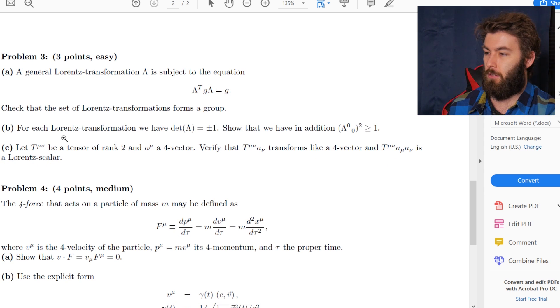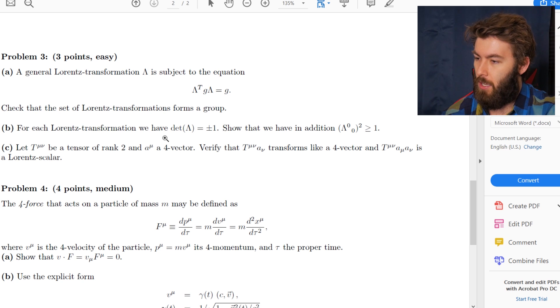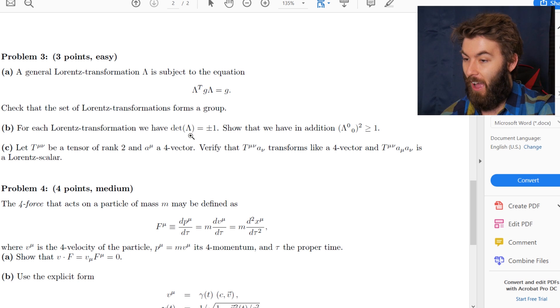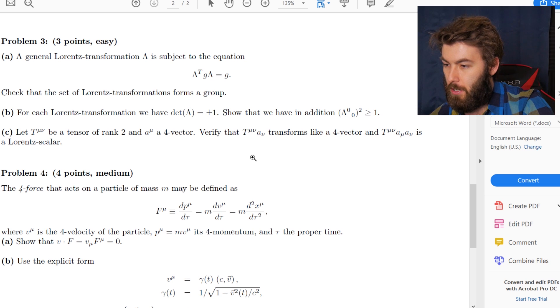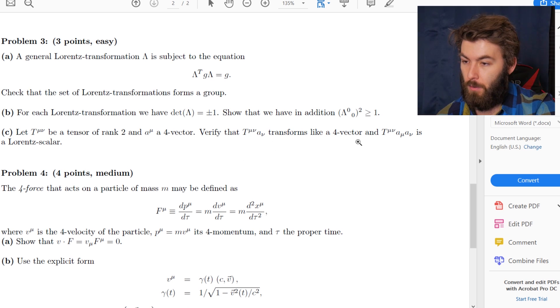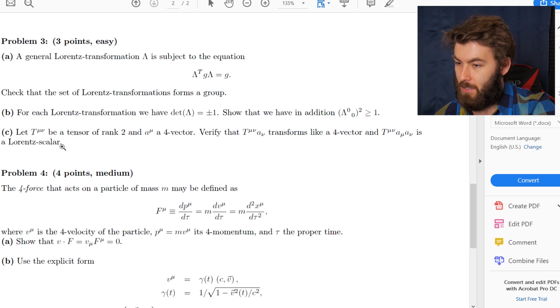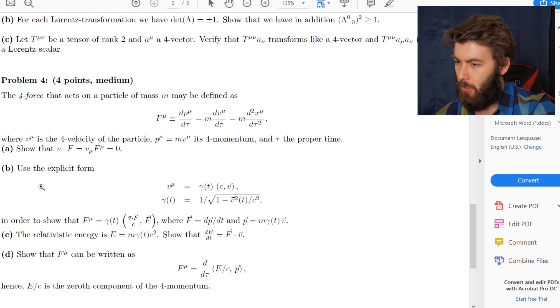Let T mu nu be a tensor of rank two. I like how much this is emphasizing comfortability with tensors, index manipulation and how tensors transform. I like this. This is going to be fun. So this is a tensor of rank two and A is a four vector. Verify that the contraction of T and A transforms like a four vector and this is a Lorentz scalar. Again, it should be really easy.